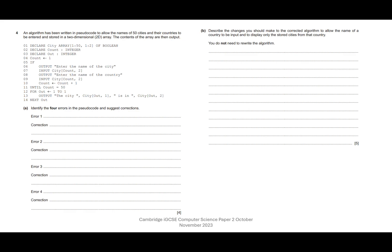Question 4, part B. Describe the changes you should make to the corrected algorithm to allow the name of a country to be input and to display only the stored cities from that country. You do not need to rewrite the algorithm. We will talk about the mark scheme in a minute. In the question they are asking us to describe and they are not asking for the pseudocode to be written. The way to get the marks for this is to go what and where.